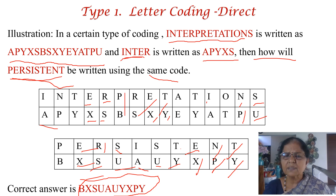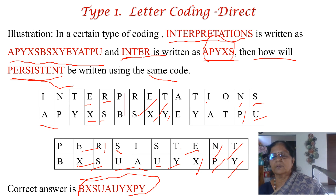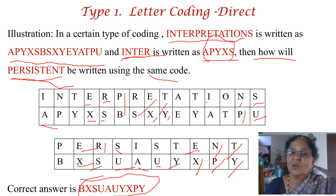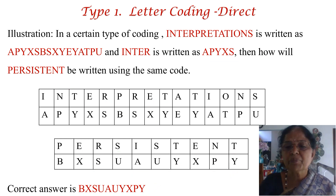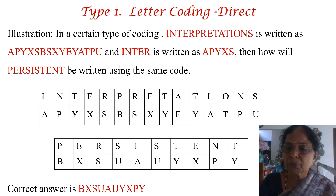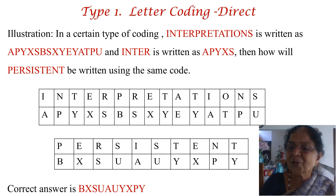Why is the word 'inter' also given in the question? It is useful data, not noise, because it gives you an additional clue. In both 'interpretations' and 'inter', the same direct-order coding is used — I is A, N is P, T is Y — confirming the pattern. So this is useful data to help you understand the coding method.